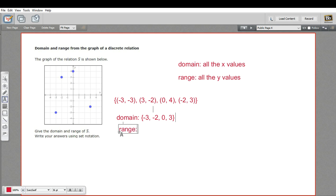And if we want the range, we just pick all of the y values. Let's do it from smallest to greatest. We've got negative three, we've got negative two, we've got three and four for y values.